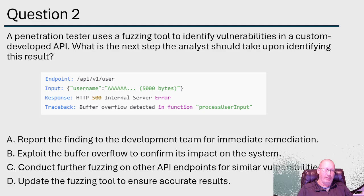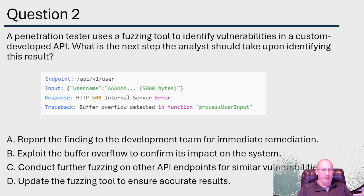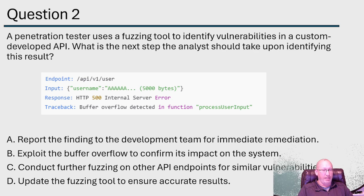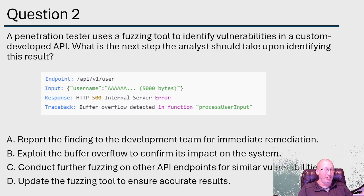What is the next step the analyst should take upon identifying this result? A: Report the findings to the development team for immediate remediation. I like this, especially if there is in fact a buffer overflow, because as a cybersecurity specialist we would want that fixed, and the best way to fix it is to have the development team go through it. Very good answer. B: Exploit the buffer overflow to confirm its impact on the system. No — we're not penetration testers. We see a penetration tester used a fuzzing tool, but we ourselves are not a penetration tester, so B would not be correct.